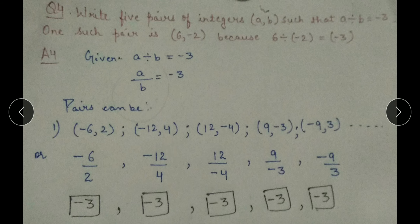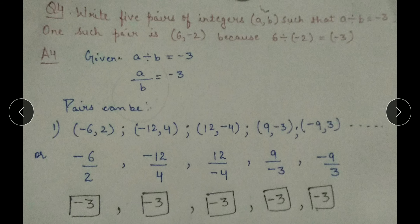Next, take 3 as the second integer: 3 times 3 is 9, giving pairs (9, minus 3) and (minus 9, 3). You can see that 9 divided by minus 3 equals minus 3, and minus 9 divided by 3 also equals minus 3. In all cases we are getting minus 3. You can take any such pair — the pattern works for any multiple of 3 with opposite signs.